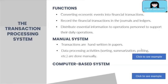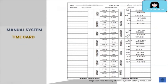To better understand this, let's use an example. On your screen you'll see time cards used by fast food crews. Before they enter the sales outlet, their time cards are placed on wooden shelves beside the back door. The shelves are marked with letters representing the first letter of the surnames of the employees. The crews get their time cards and insert them on the bundy clock, a mechanical device that punches the time in and time out of employees.